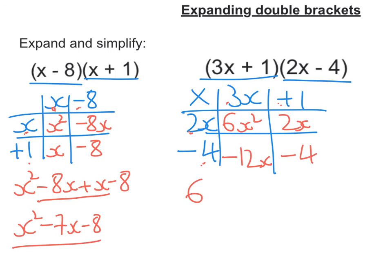So we're going to get 6x squared plus 2x minus 12x minus 4. Combine the two middle terms and we get 6x squared minus 10x minus 4.